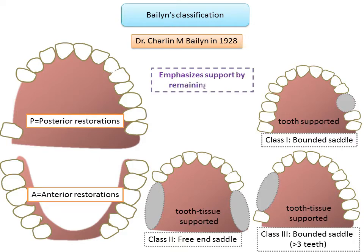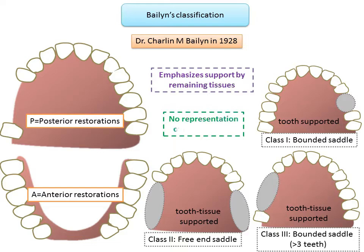The advantage of Balen's classification is that it emphasizes support by remaining tissues, so it can guide in designing the removable partial denture. The disadvantage, similar to Commer's classification, is that it does not represent the number of teeth which are missing in the edentulous area.